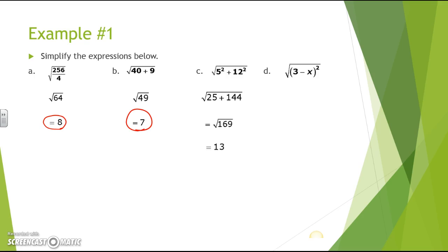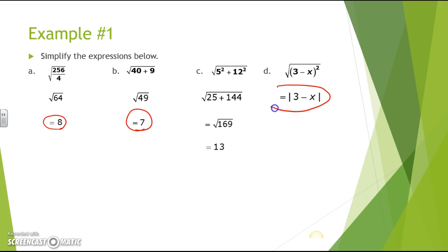It's very important to show your work. The next one, we have the square root of the quantity (3 minus x), all squared. When something is squared and you take the square root of it, it just leaves you with what's in the radicand. So you bring down the values under the radical to get the absolute value of x minus 3. Remember, when you square something, to unsquare it you take the square root and bring that down.